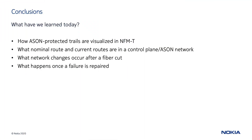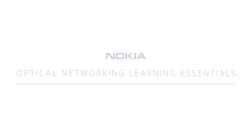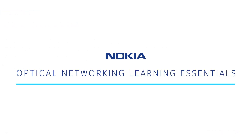Today, we have seen how to visualize an ASON trail — how nominal and current routes are reported on NFMT, and what happens when a failure is affecting the transmission. Thanks for watching, and look for more videos in our Optical Networking Learning Essentials series.